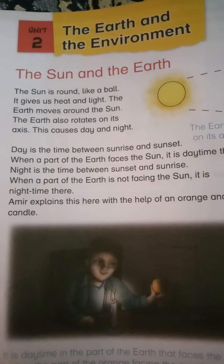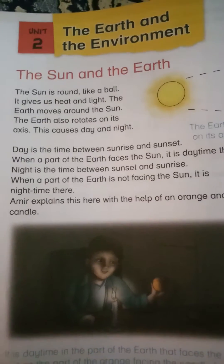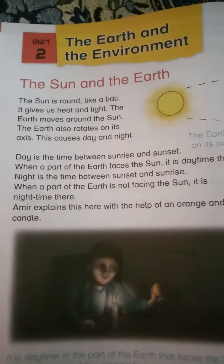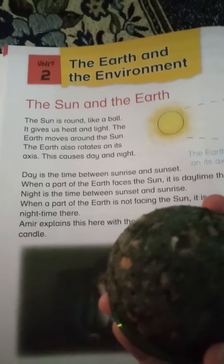First of all, we read about the sun. The sun's shape is round, just like a ball. It gives us heat and light. The earth moves around the sun.